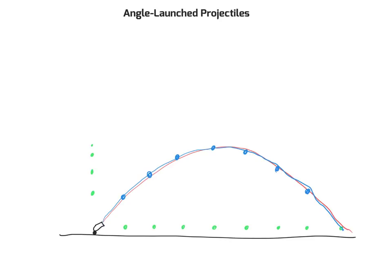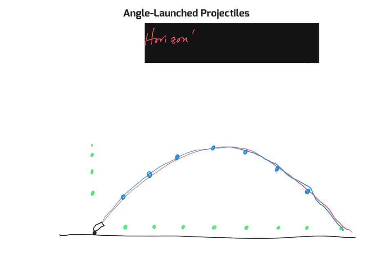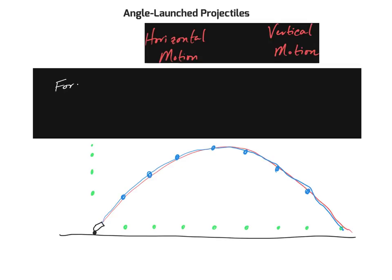To wrap up this first video lecture on projectile motion, let's summarize with a table. Looking at horizontal motion versus vertical motion — because in 2D kinematics we can split things into components. In horizontal motion, are there any forces acting on the object? The answer is no — there are no forces acting in the horizontal direction because we assume no air resistance. However, in the vertical direction, yes — the force of gravity is acting in the downward direction at all times.